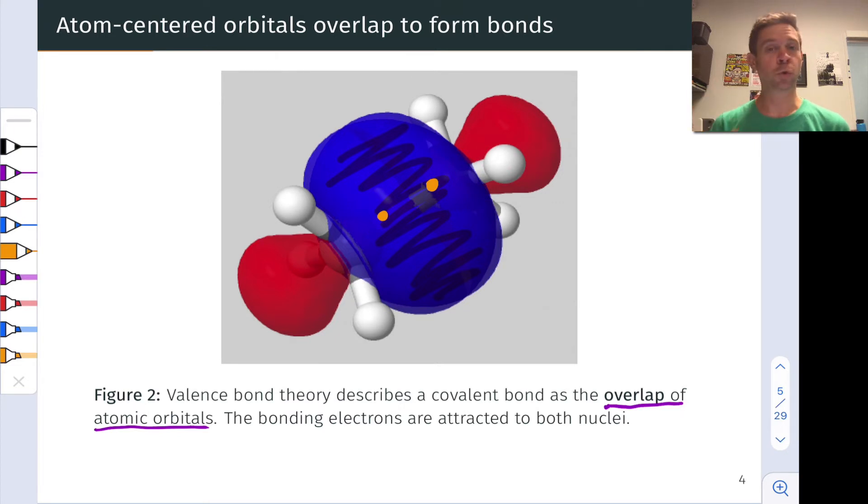Now, these two orbitals may not look familiar to you. They look kind of like skewed p orbitals. They don't look exactly like p orbitals, and they certainly don't look like spherically symmetric s atomic orbitals. In fact, they're hybrids, and we'll come to hybridization a little bit later.